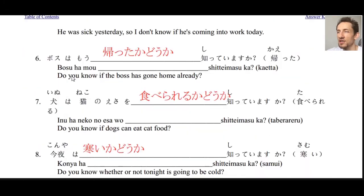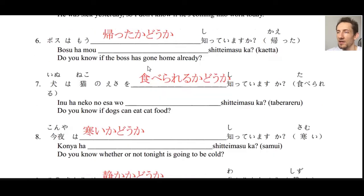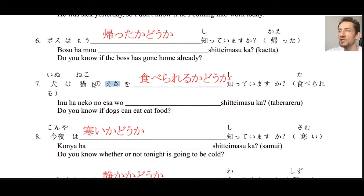Number six: ボスはもう帰ったかどうか知っていますか？ — Here we have 帰る in the past tense, so we can also use this structure with past tense verbs: 帰ったかどうか — do you know if the boss went home or not? Number seven: 犬は猫の餌を食べられるかどうか知っていますか？ — 餌 means food for an animal — do you know whether or not dogs are able to eat cat food? 食べられるかどうか.